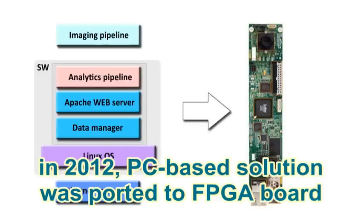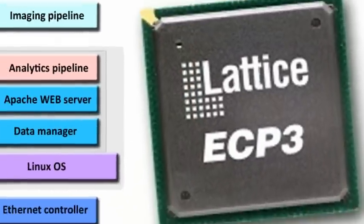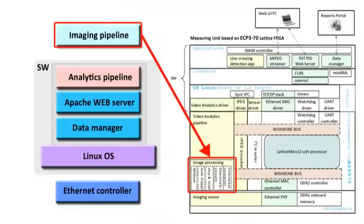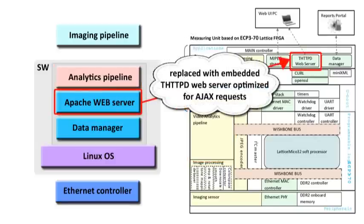In 2012, the PC-based solution was ported to an FPGA board. Each component, one by one — namely, the Imaging Pipeline was ported into the Image Processing Module; the Video Analytics Pipeline was re-implemented in Programmable Logic; and Apache Web Server was replaced with THTTPD Web Server, optimized for AJAX Requests.